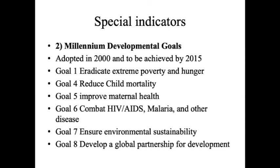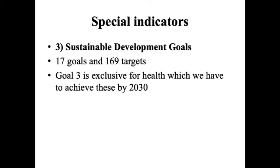In 2015, when these goals were reviewed and WHO found that most countries had not achieved them, they introduced Sustainable Development Goals (SDGs) to be achieved by 2030. There are 17 goals and 169 targets. Goal 3 in the SDGs is exclusively for health. SDGs will be discussed later in brief.